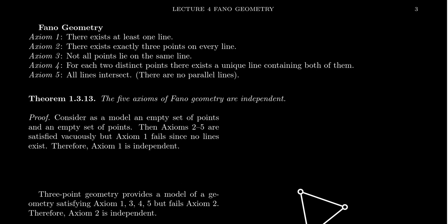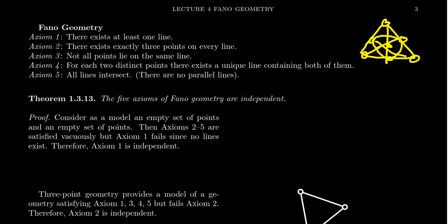And that model basically looks like the following, which I'll just draw a small replica of quickly. Basically, like the Harry Potter Deathly Hallows — one of the worst drawings ever done — three elder wands there. So this is our Fano geometry. Take a look at the previous video if you need to see a better drawing of that.